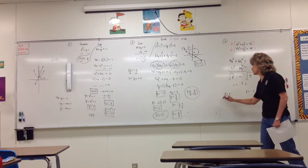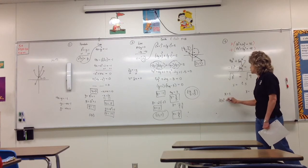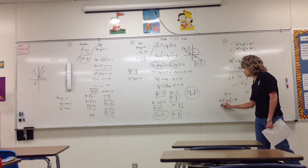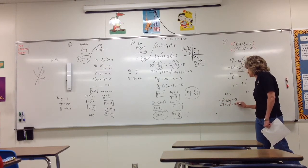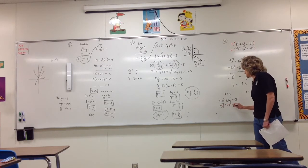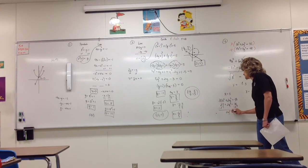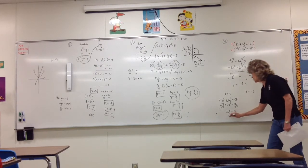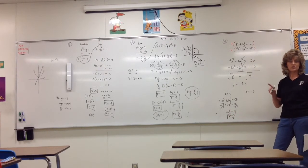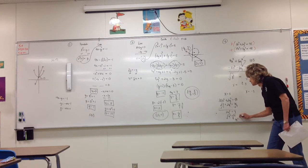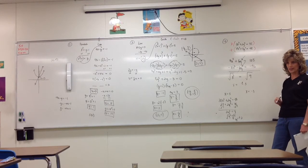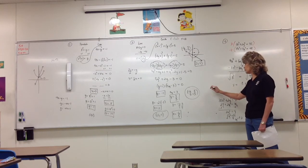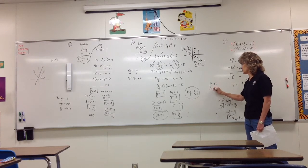Plugging x equals 3 into the top equation: 3 times 3 squared plus 2y squared equals 35, so 27 plus 2y squared equals 35. Subtract 27: 2y squared equals 8, so y squared equals 4. Taking the square root gives y equals plus or minus 2. So we get two ordered pairs: (3, 2) and (3, negative 2).